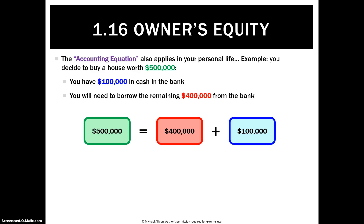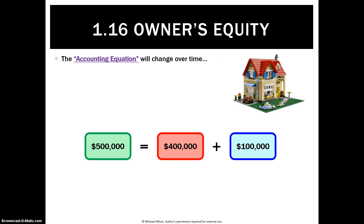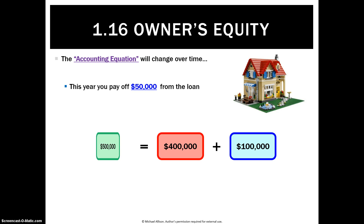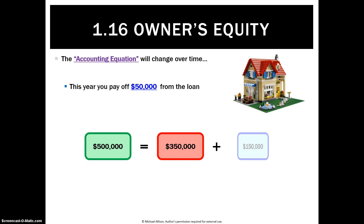That's a very common situation for most people buying their home — a 20% deposit on a $500,000 house. However, the accounting equation will change over time. Let's pretend a year later you pay off $50,000 from the loan. Your house is still worth $500,000, but you owe the bank $350,000. So the right hand side doesn't equal $500,000 with just $350,000 plus $100,000 — as you pay back the bank, that increases your equity to $150,000, and the accounting equation balances.